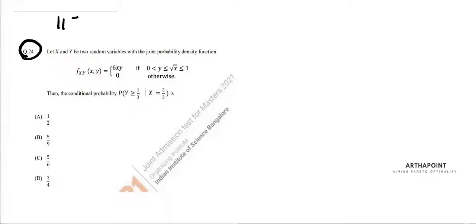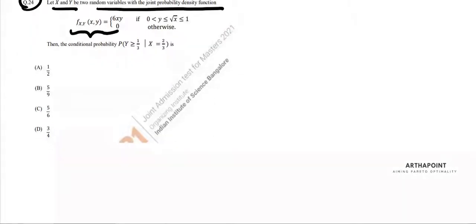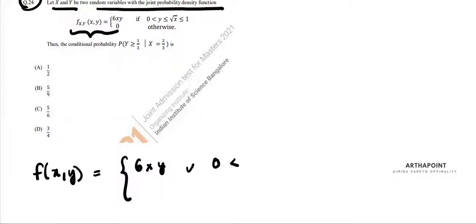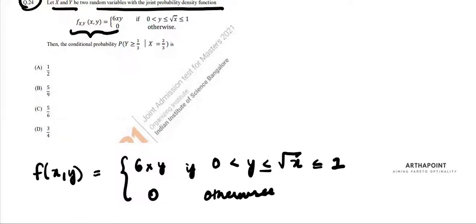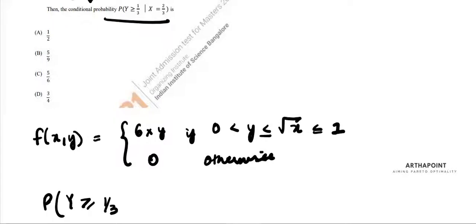This is question number 24 of IIT JAM Economics 2021 paper. X and Y are two random variables with joint probability density function given. We can rewrite this: f(x,y) = 6xy, where y is between 0 and root x, and 0 otherwise. We have to find the conditional probability — a very simple question — of Y greater than or equal to 1/3.